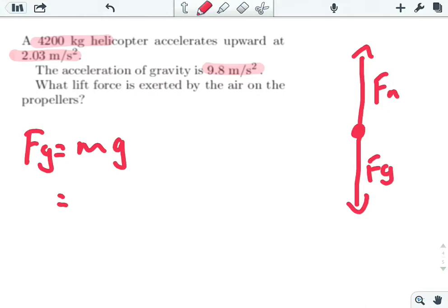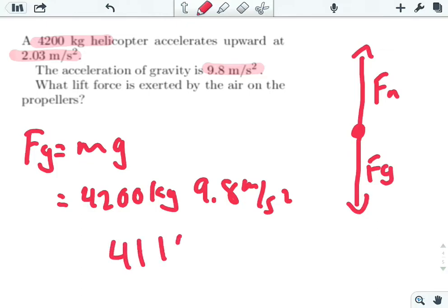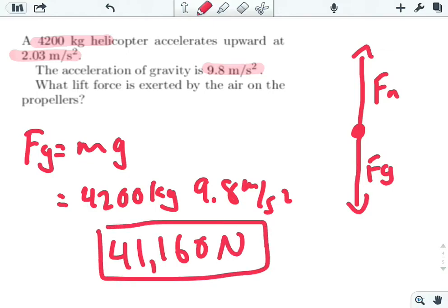So we calculate the weight: 4,200 kilograms times 9.8 meters per second squared, which gives us 41,160 newtons. That's just the force due to gravity.